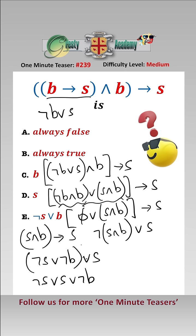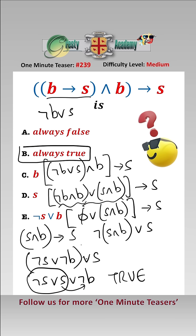Well, not S or S is basically always true, and anything that's always true or anything else is still always true. So the answer is always true.